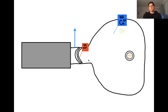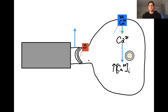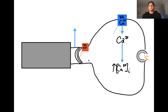When these voltage-gated calcium channels open, calcium flows into the cell, which increases the intracellular calcium level. This then facilitates the fusion of the vesicle with the presynaptic membrane, releasing neurotransmitters into the synapse.